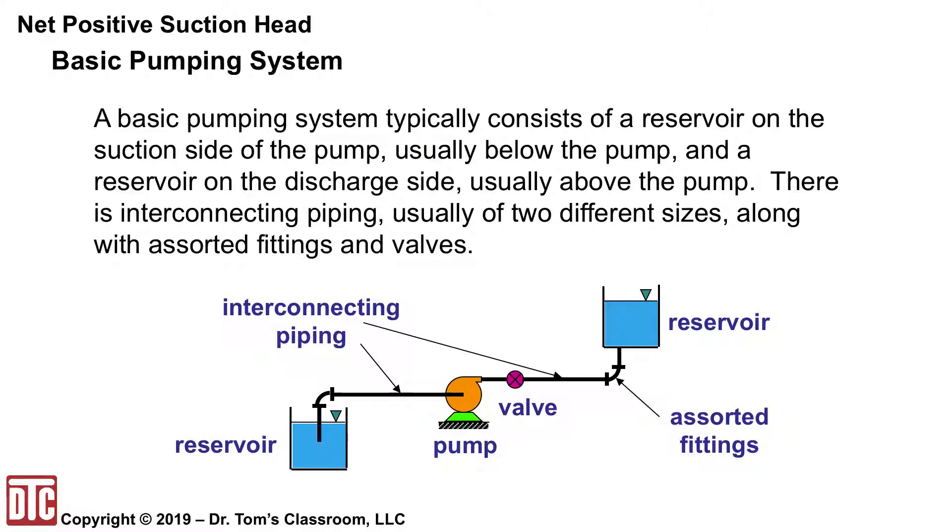A basic piping system typically consists of a pump that's pumping things from one reservoir to another. In this particular case, I'm showing the reservoir below the pump on the left and above the pump on the right. It could be the other way around. And we're going to have some interconnecting piping, some assorted fittings, things like that.